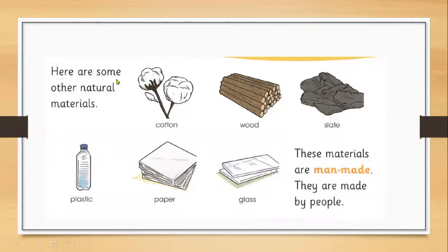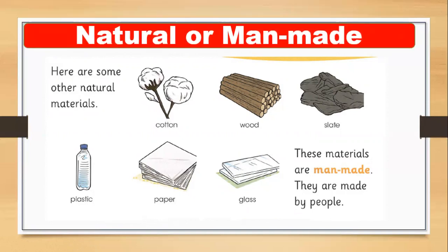Here are some other natural materials: cotton, wood, and slate (like a rock) — these are all natural materials. Man-made materials include plastic, paper, and cloth, because man creates these things. The first three pictures show natural materials that come from nature, and the last three are man-made — man creates these things by using natural things. Remember: plastic, paper, and glass are man-made.